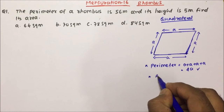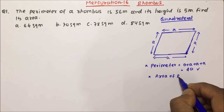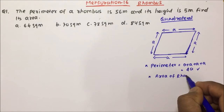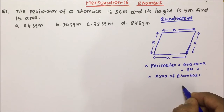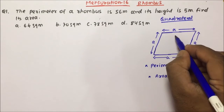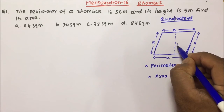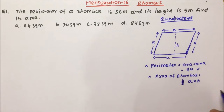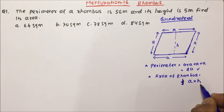Now friends, if I ask about the area of rhombus, that will become a into h, where h is nothing but the height. So a is the side and h is the height — area of rhombus equals a × h.